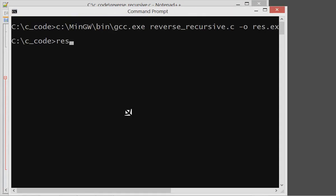Let's run this program. I will compile this. Output is here in res.exe. It asks user to enter a number. I enter 12045. Reverse is 54021.